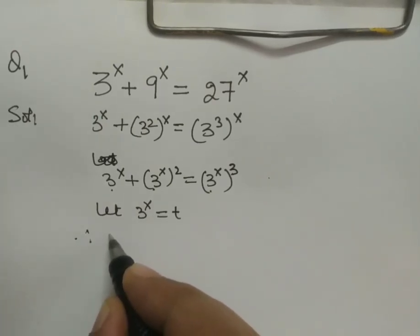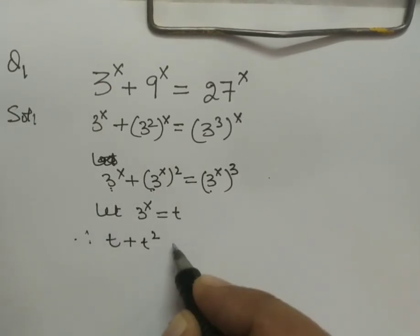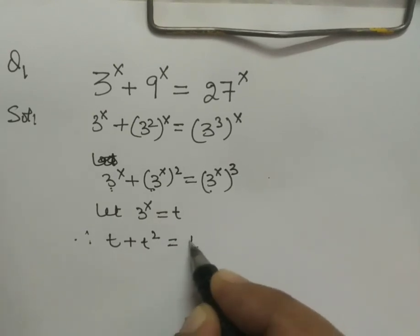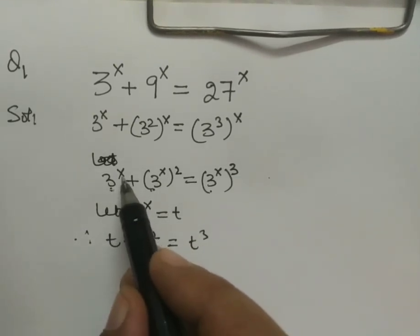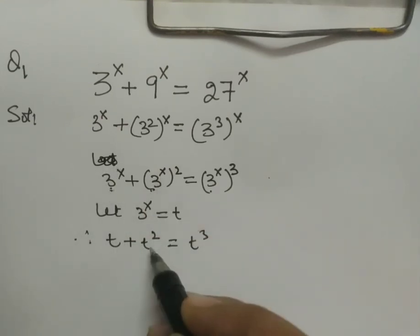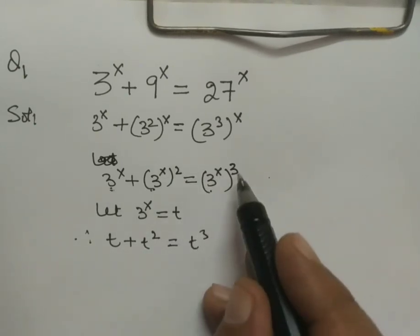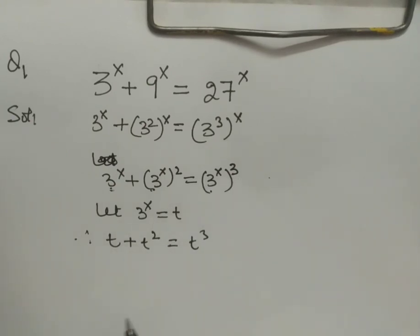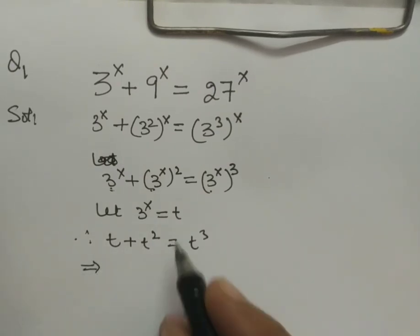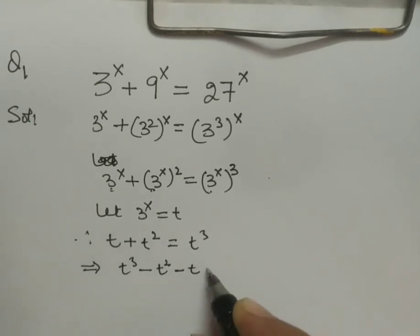After substitution, the equation becomes t + t^2 = t^3. Rearranging, we get t^3 - t^2 - t = 0.